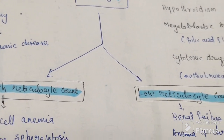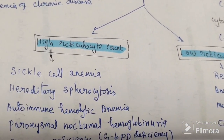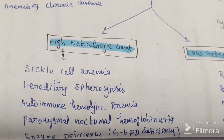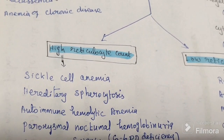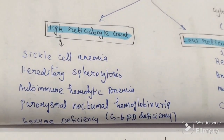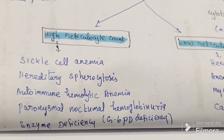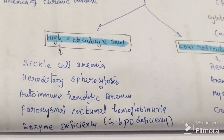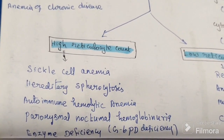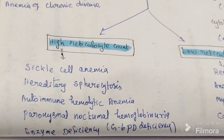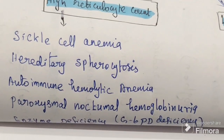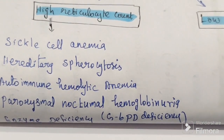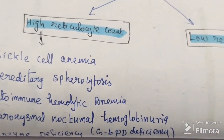Based on the reticulocyte count, normocytic anemia is divided into high reticulocyte count and low reticulocyte count. High reticulocyte count examples: sickle cell anemia, hereditary spherocytosis, autoimmune hemolytic anemia, paroxysmal nocturnal hemoglobinuria, and enzyme deficiency — most commonly glucose-6-phosphate dehydrogenase (G6PD) deficiency.